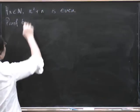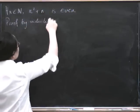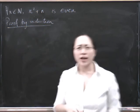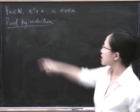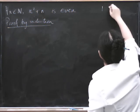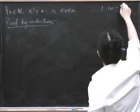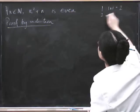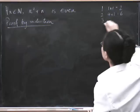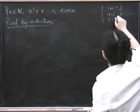Proof by induction. Now we can just try it for a few values of n. Let's try it for the first few. For 1, we get 1 plus 1, which is 2. For 2, we get 4 plus 2, which is 6. For 3, we get 9 plus 3, which is 12.